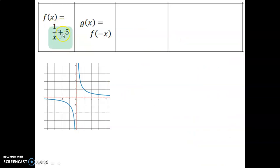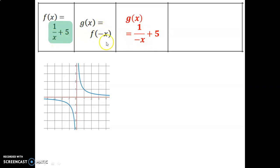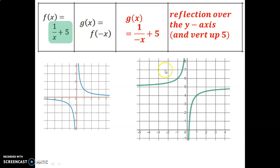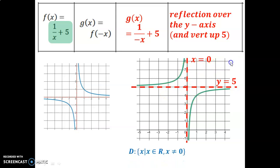Starting from a shifted function, we replace x with negative x, giving a reflection over the y-axis. Combined with a vertical shift up 5 units, the graph is reflected and then shifted up. The horizontal asymptote moves to y equals 5, while the vertical asymptote stays at x equals 0.